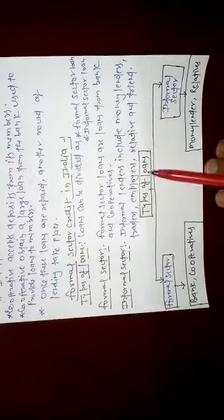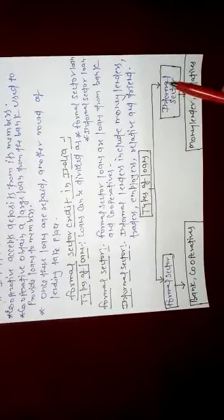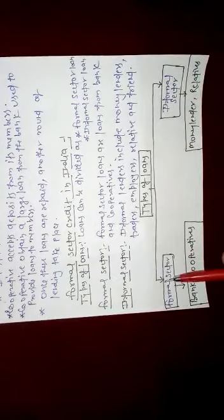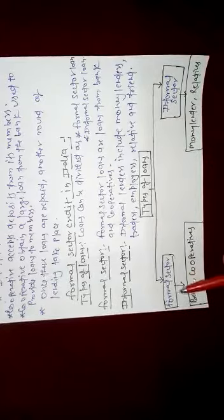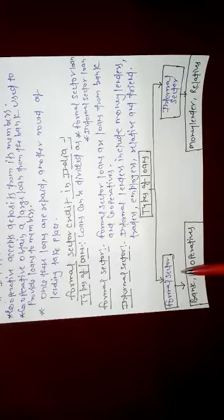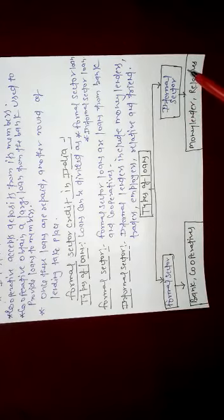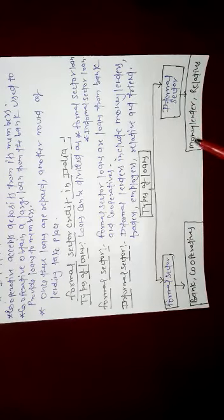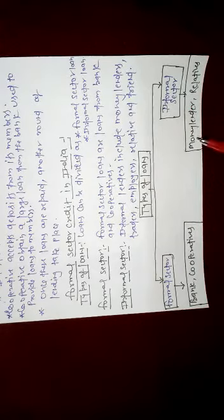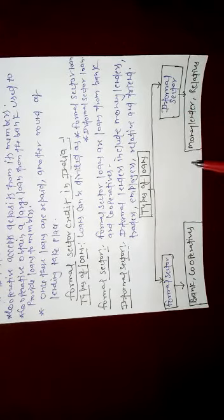So, types of loan: formal sector and informal sector. Formal sector basically depends on banks and cooperative societies. Informal sector includes money lenders, relatives, friends, employers, and traders. Thank you very much.